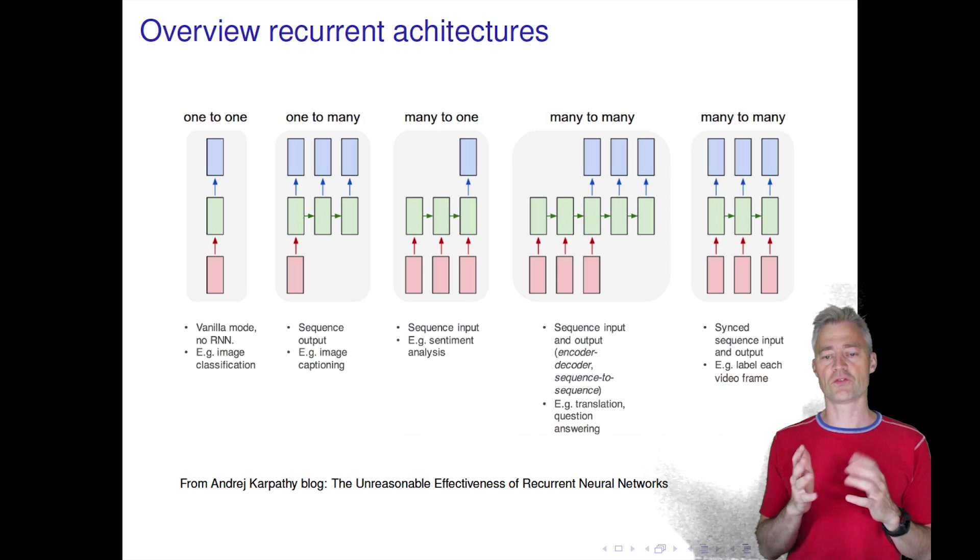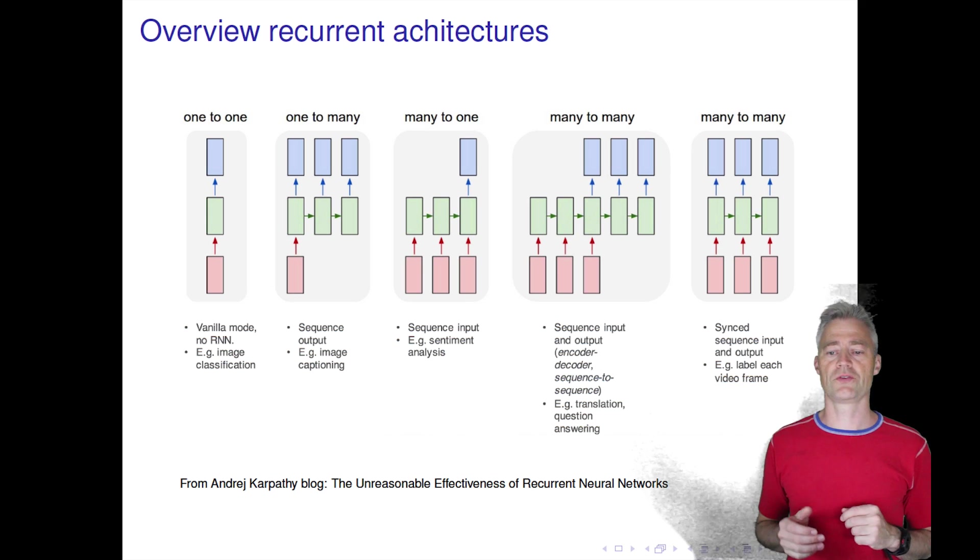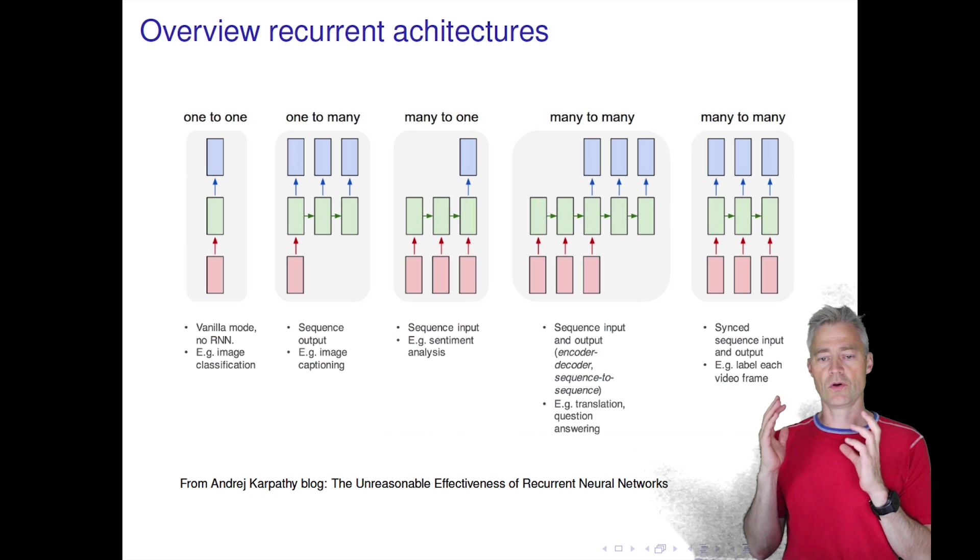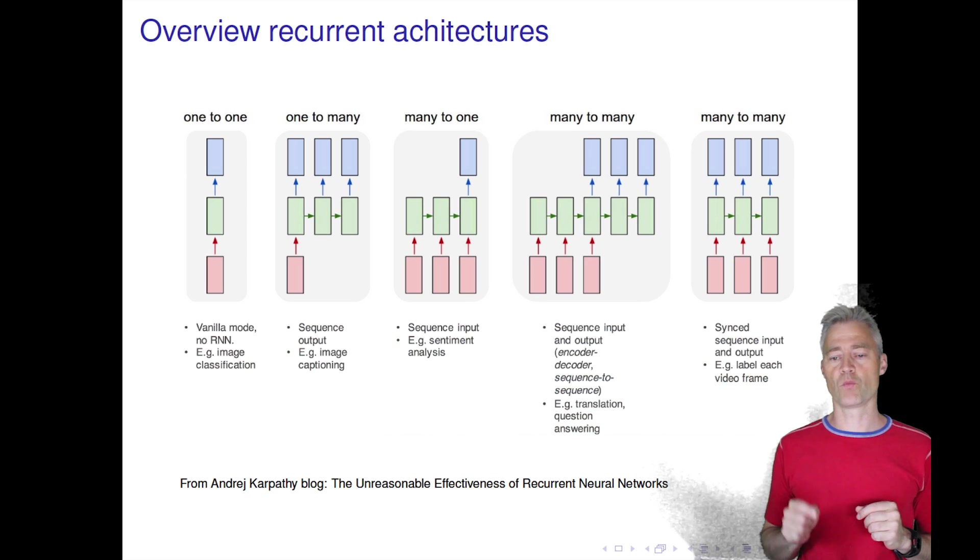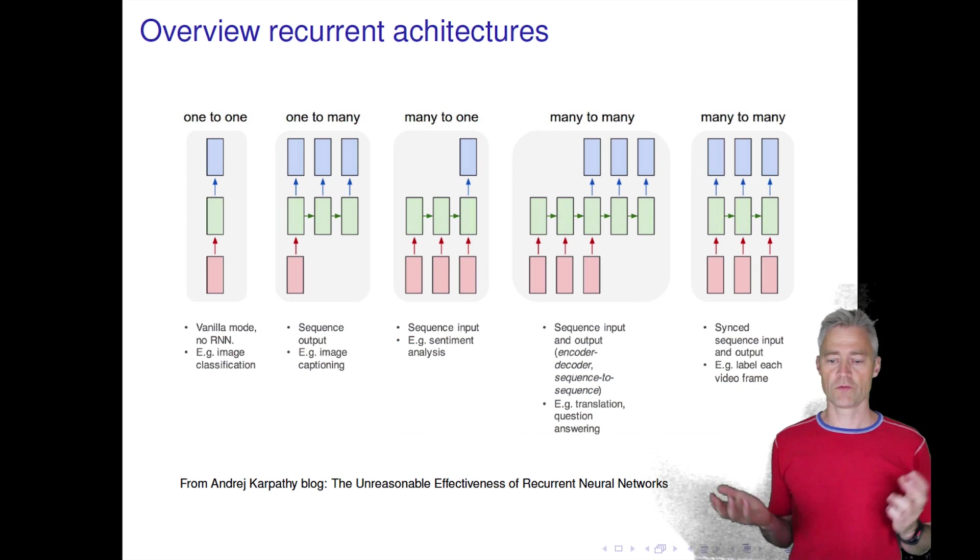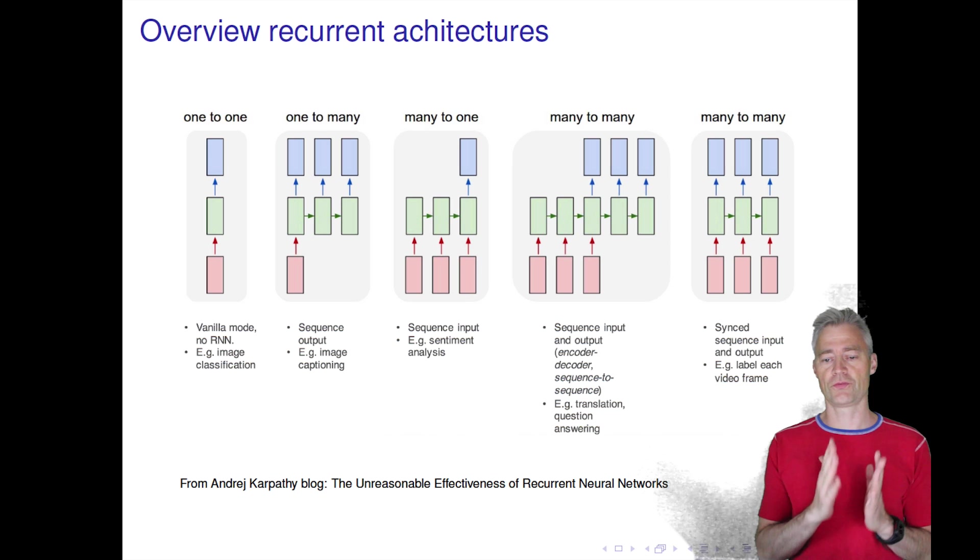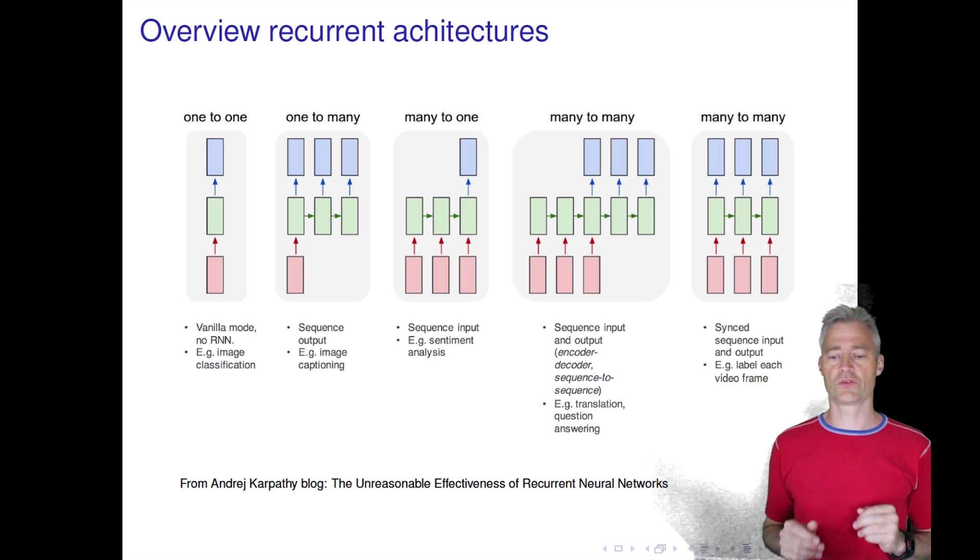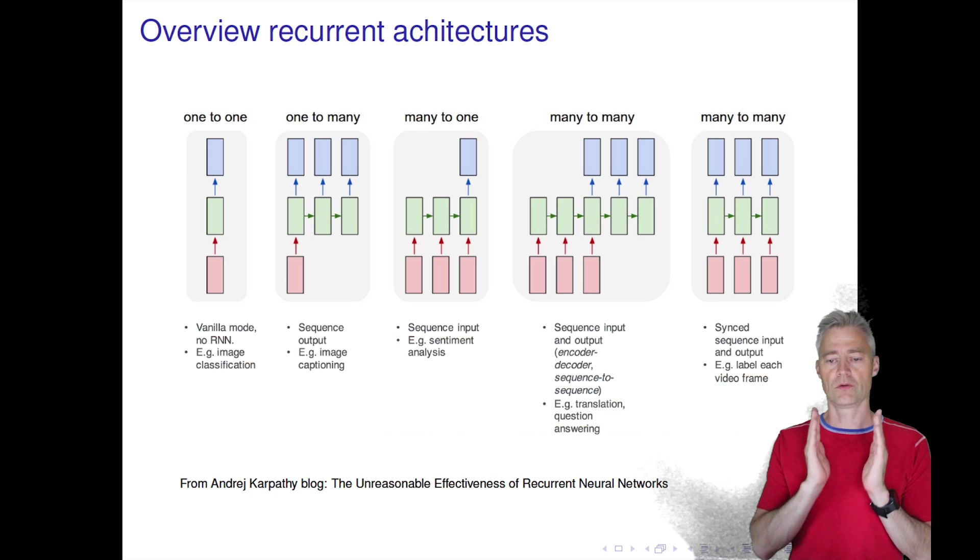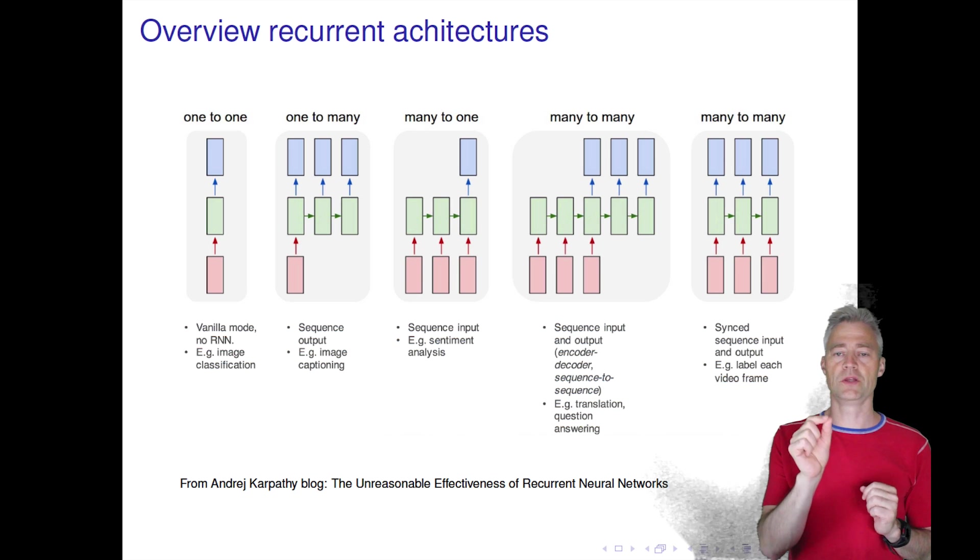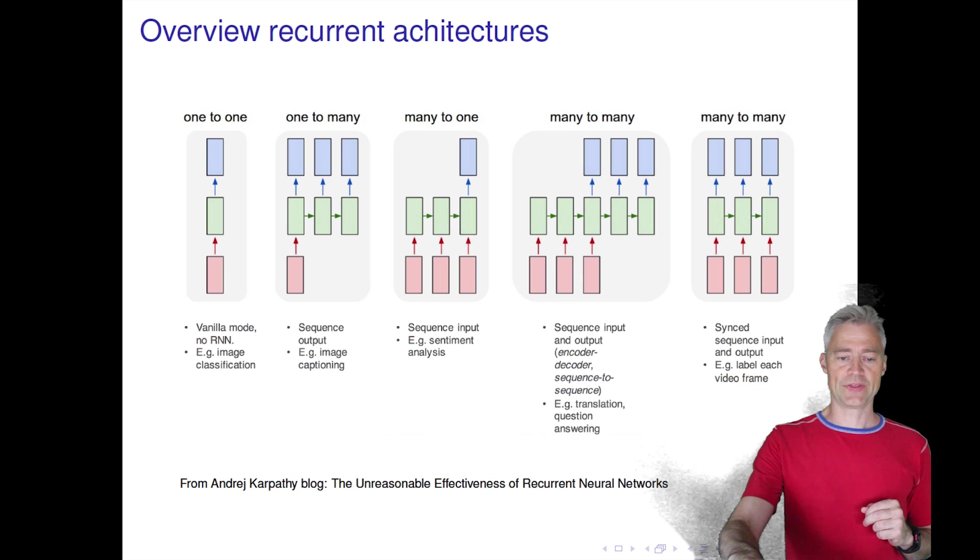Then we have the many-to-many, which is the machine translation example. Then we have another type of many-to-many where we have a one-to-one between the input and the output, where we want to label each point in our sequence. This could be for example secondary structure prediction, predicting for each amino acid what kind of secondary structure element this amino acid is in.